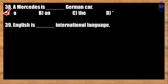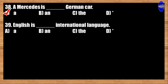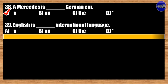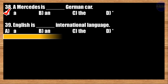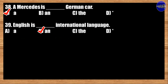Number thirty-nine: English is blank international language. A: a; B: an; C: the; D: blank. The best answer is option B. English is an international language.